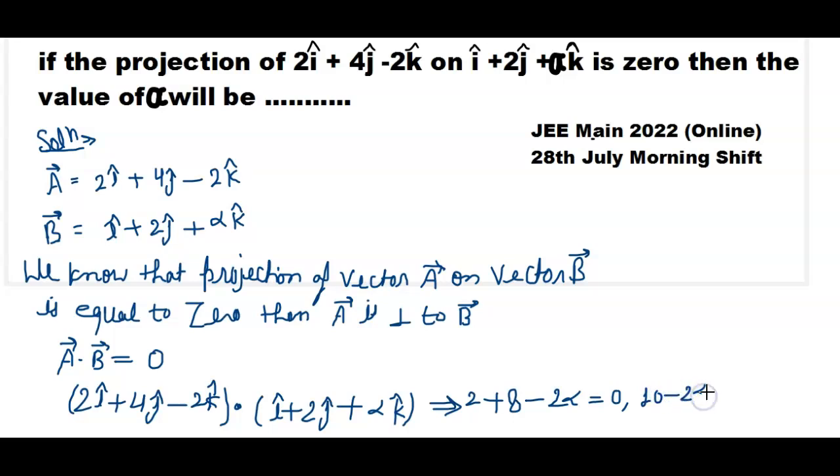10 minus 2 alpha equals 0. So alpha equals 10 divided by 2. Then alpha value I got 5.